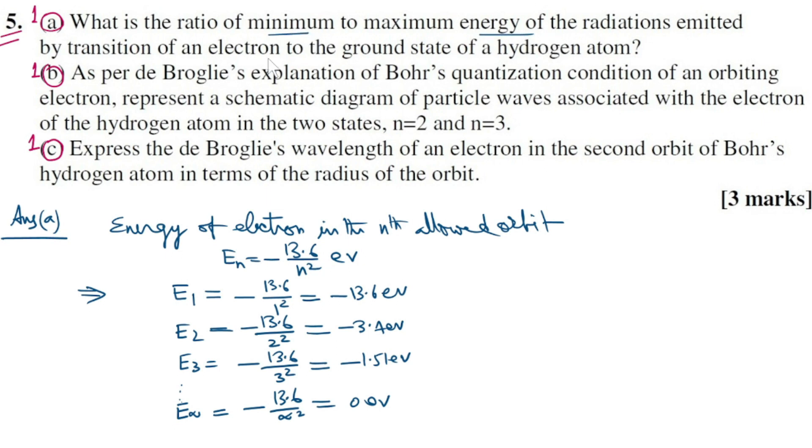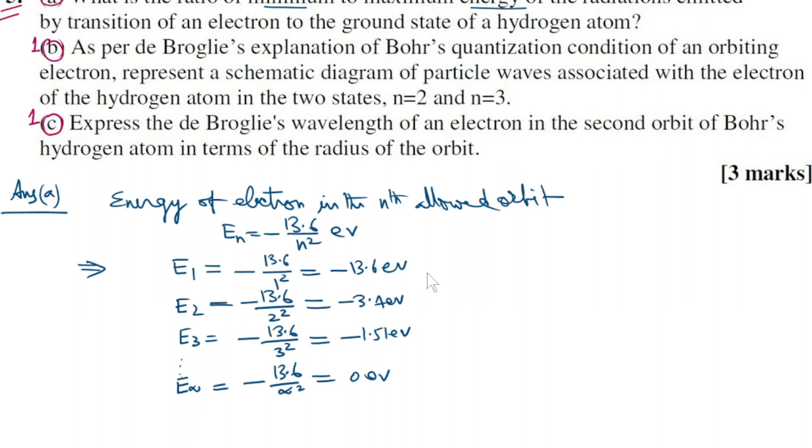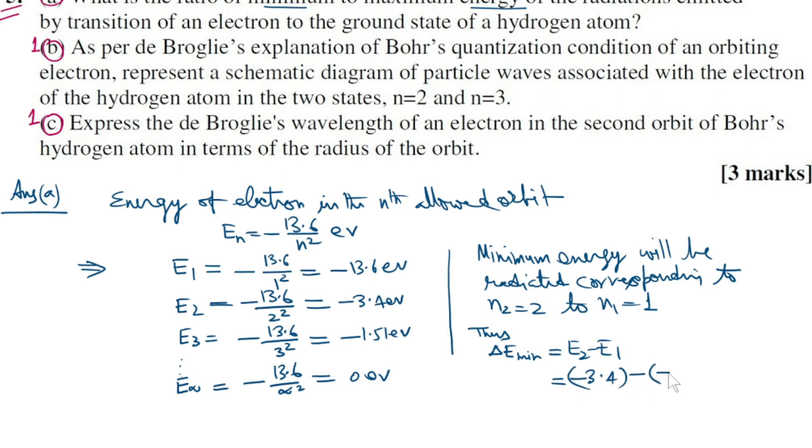Minimum energy will be radiated corresponding to the transition from n equals 2 to n equals 1. Thus, delta E min equals E2 minus E1, which equals minus 3.4 minus minus 13.6, equals plus 10.2 electron volts.